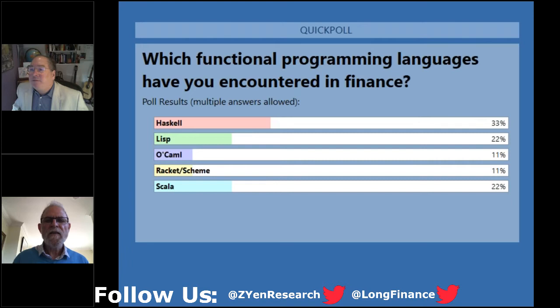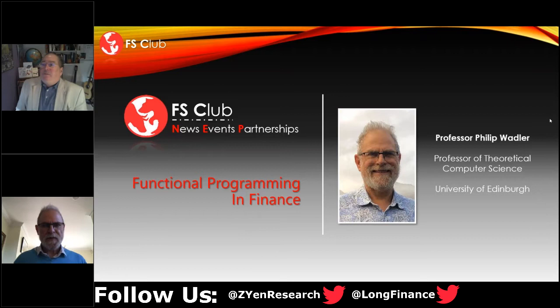This is an interesting distribution — 11% is probably one respondent. When you use OCaml and so on — Haskell wins. Yay.